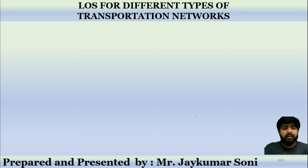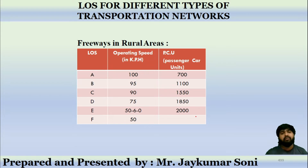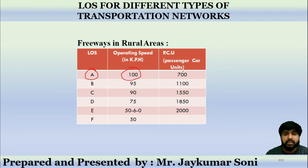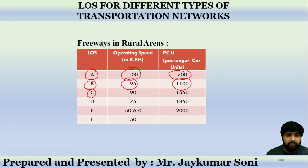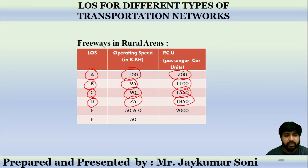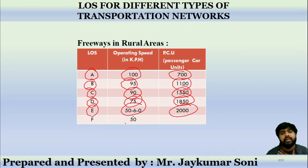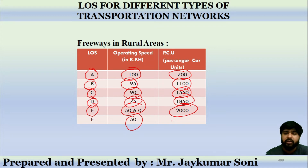Let us learn the LOS criteria for different types of transportation networks. For rural freeways: LOS A has an operating speed of 100 km/h and 700 PCU; B has 95 km/h and 1100 PCU; C has 90 km/h and 1550 PCU; D has 75 km/h and 1850 PCU; E has 50–60 km/h and 2000 PCU; F has 50 km/h and PCU is not defined in this category.